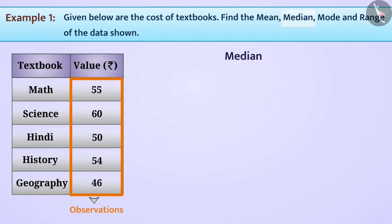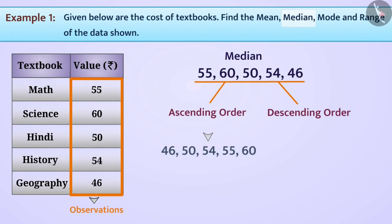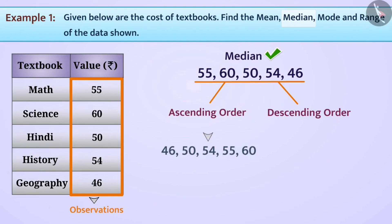Now to find the median, let us arrange the data in ascending order. We have learned that the observation in the middle of the arranged data is the median. Looking at the data provided, observation 54 is the centermost value and therefore it is the median.